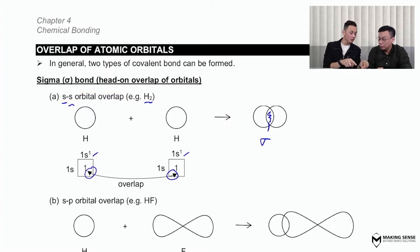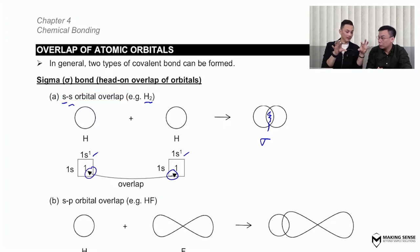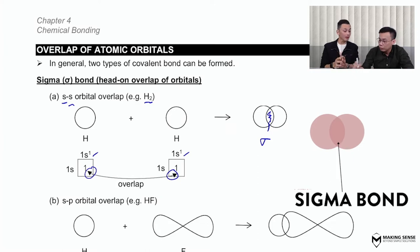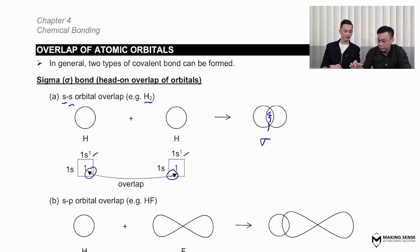So you're saying that the two orbitals move close towards each other and crash into each other — that's how you form the sigma bond. Absolutely right.